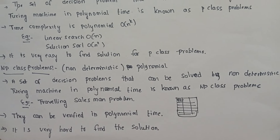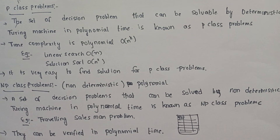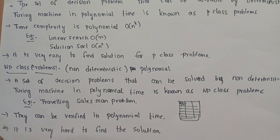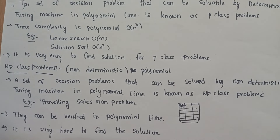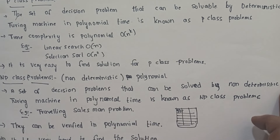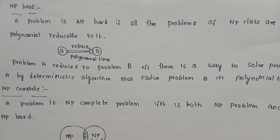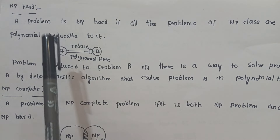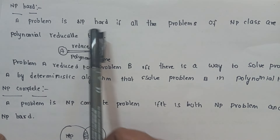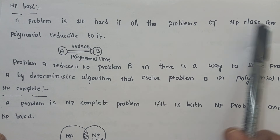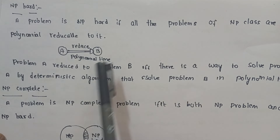This is about the P class and NP class. Next, NP hard. NP hard is a subclass of NP problems. NP problems are of two types: NP hard and NP complete. A problem is NP hard if all the problems of the NP class are polynomial-time reducible to it.